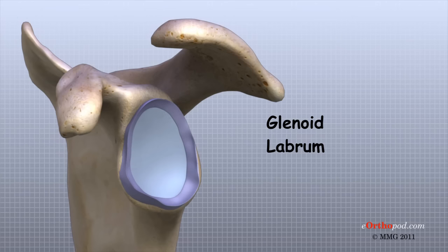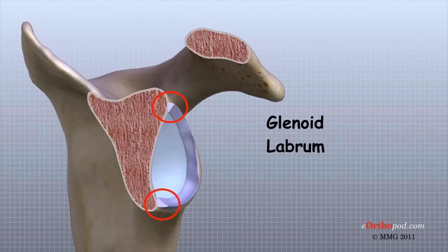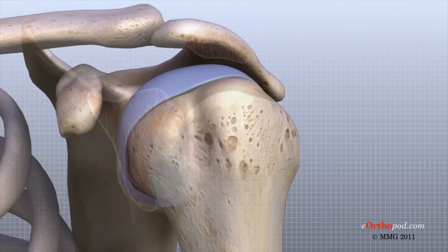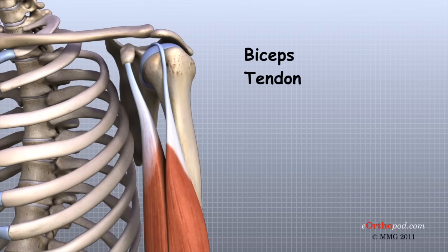A special type of ligament forms a unique structure inside the shoulder called the labrum. The labrum is attached almost completely around the edge of the glenoid. When viewed in cross-section, the labrum is wedge-shaped. The wedge shape and the way the labrum is attached create an elevated rim around the glenoid socket. This is important because the glenoid socket is so flat and shallow that the ball of the humerus does not fit tightly. The labrum creates a deeper cup for the ball of the humerus to fit into. The labrum is also where the biceps tendon attaches to the glenoid.